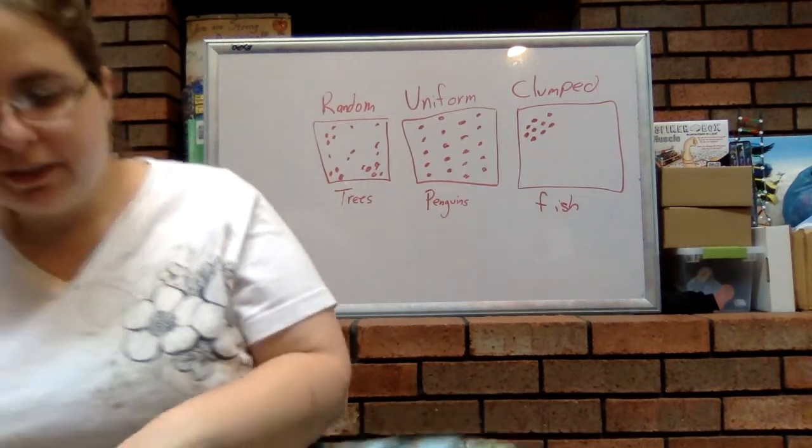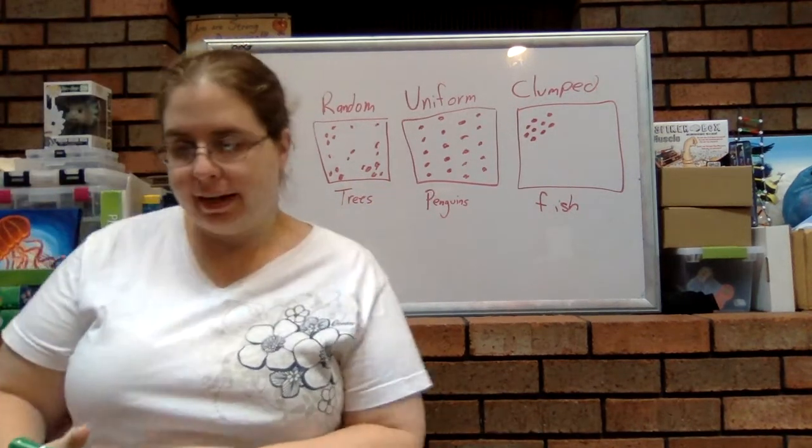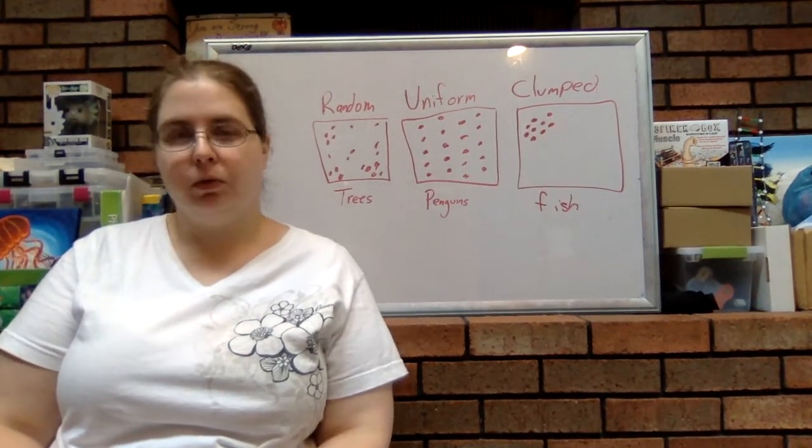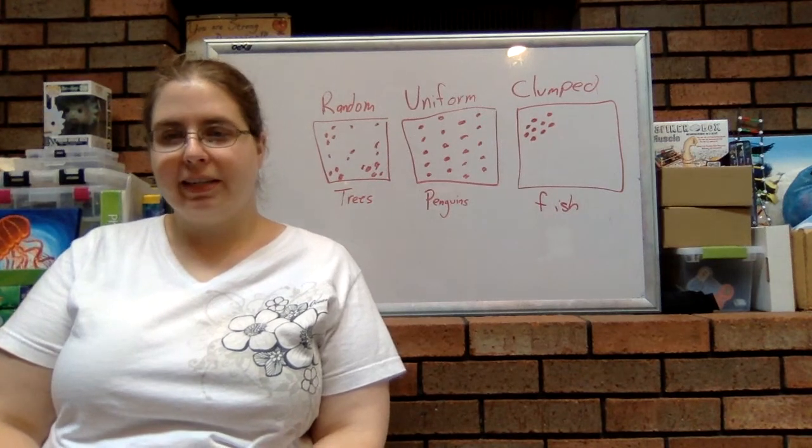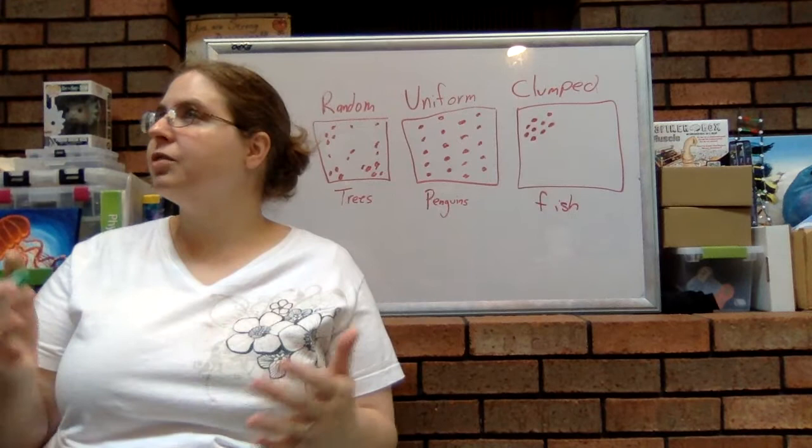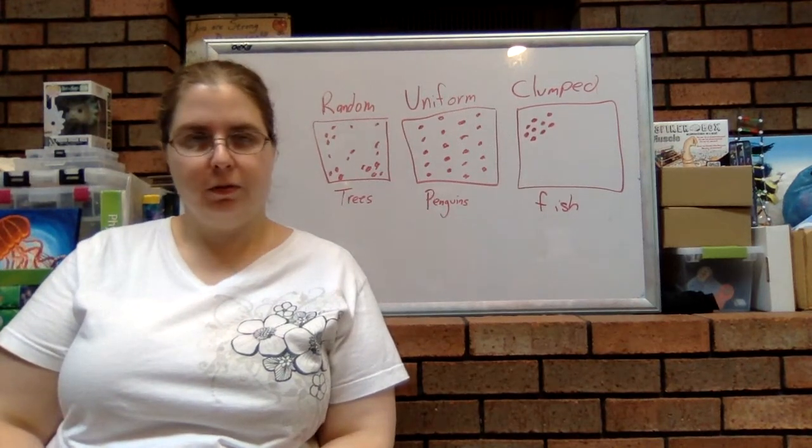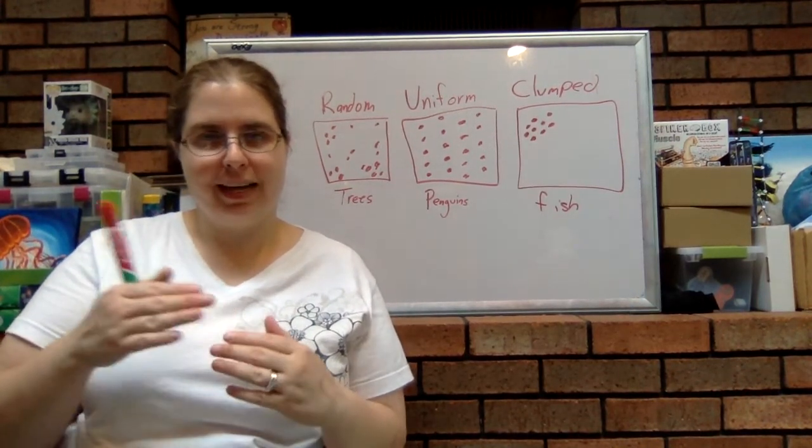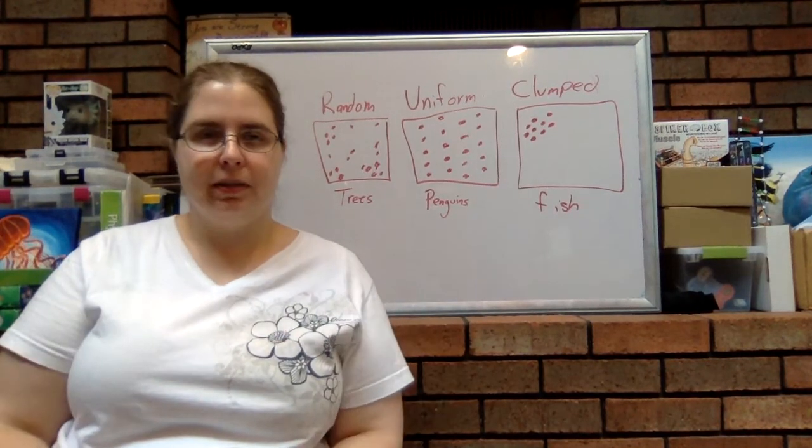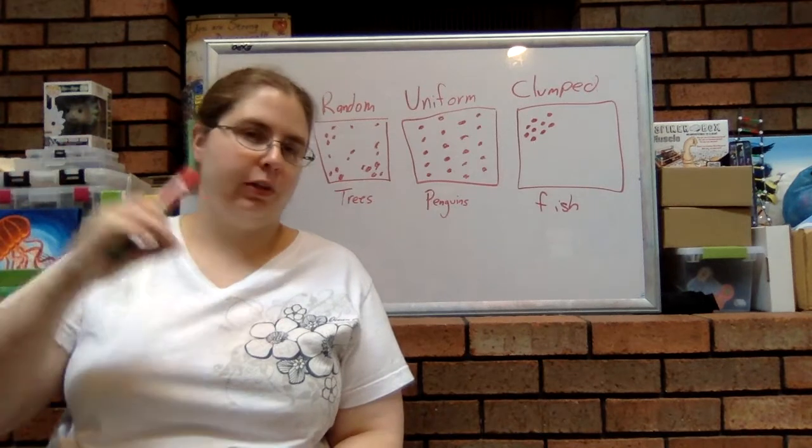When their seeds get spread and they take root, they're just going to grow wherever they can. And they'll either survive or they won't. That's why a lot of times, if you were to actually measure the distance between the trees in the forest, it's not going to be exactly all the same. So it's not like they're all exactly three feet apart and they're all in nice, pretty rows.